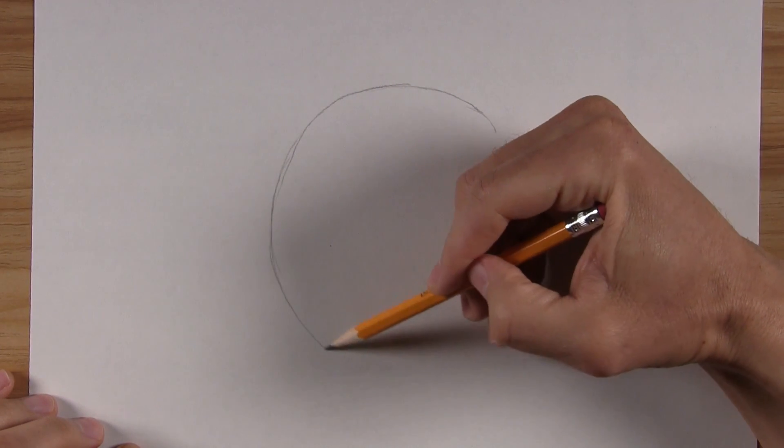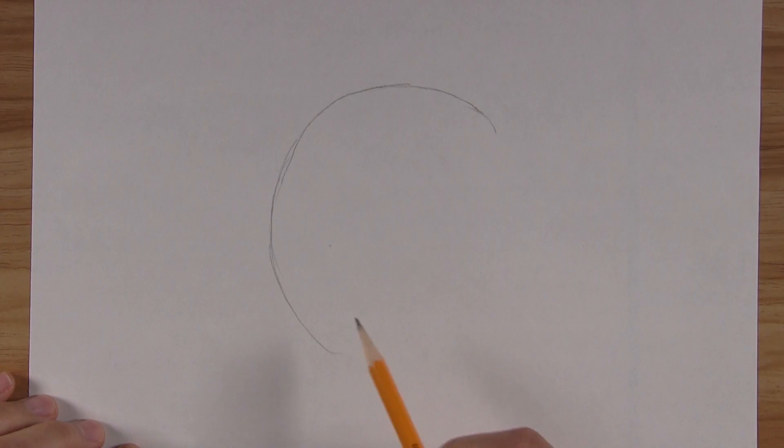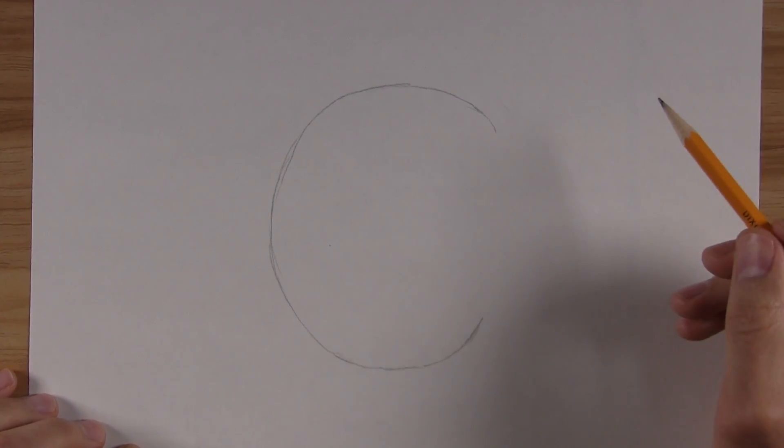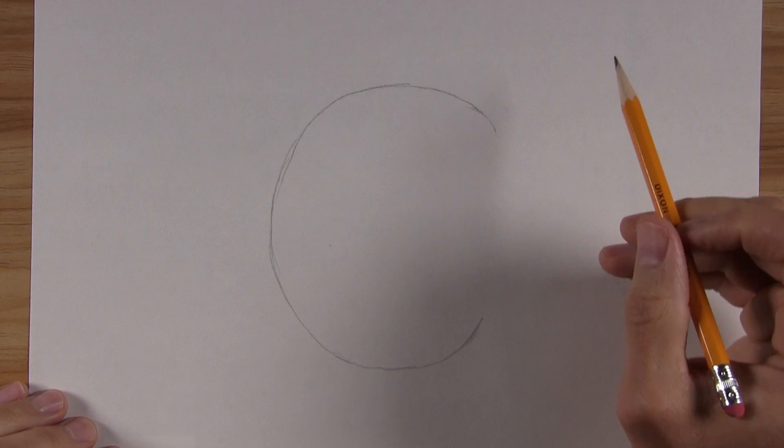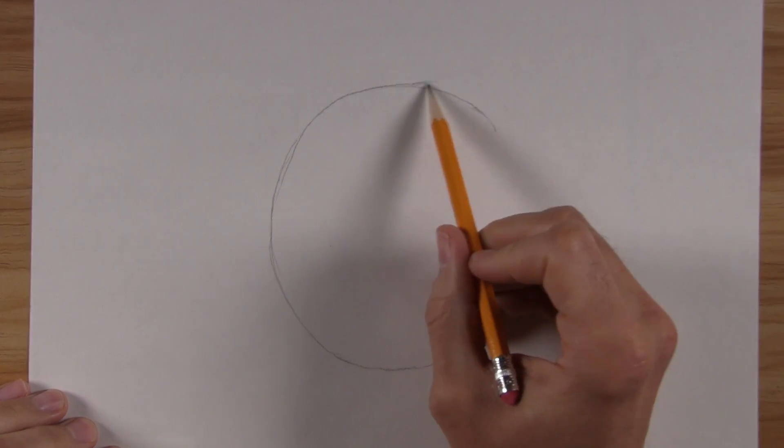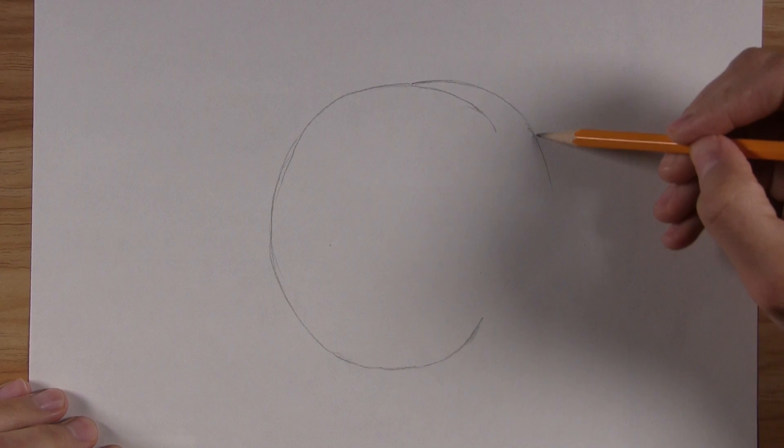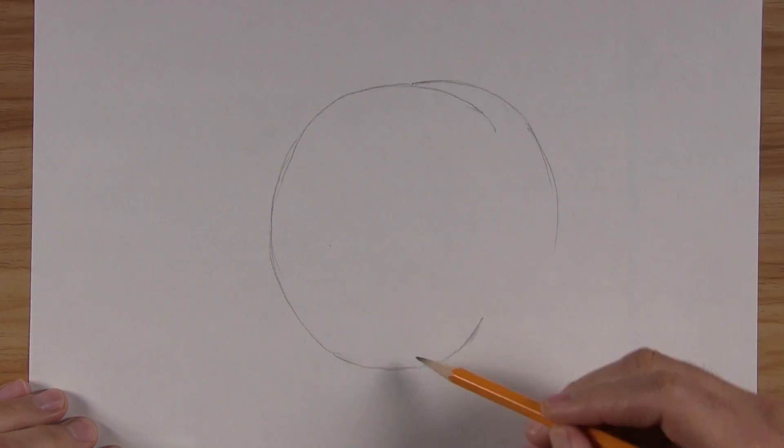Start by drawing a huge capital C on your paper, just like this. Got that? Great!